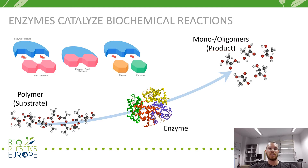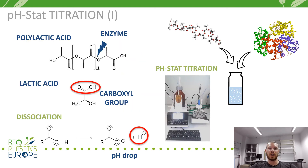Depending on the substrate, specific enzymes hydrolyze the polymer chain and release oligomers and monomers. The hydrolysis of polyesters forms carboxyl groups. The dissociation of the carboxyl group in a watery solution releases protons, causing a reduction of the pH. The amount of base that is needed to keep the pH constant is a direct measure of the hydrolysis rate of the plastic and, therefore, of its biodegradability.